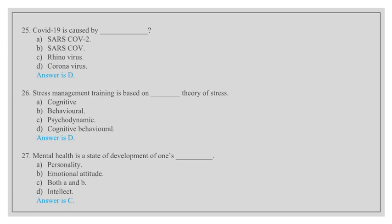Stress management training is based on theory of stress: cognitive behavioral, psychodynamic, cognitive behavioral. Answer is D, cognitive behavioral. Mental health is a state of development of one's personality, emotional attitude, both A and B, intellect. Answer is C, both A and B.